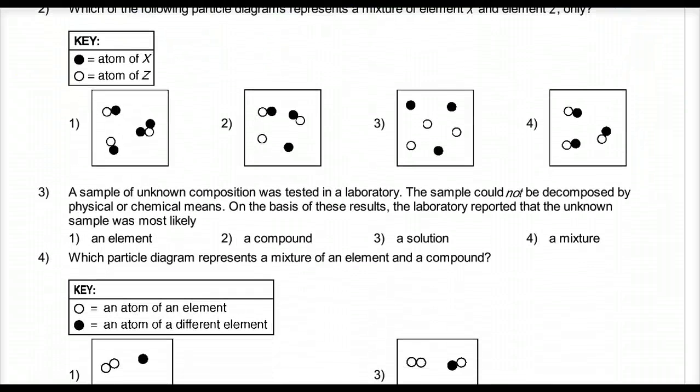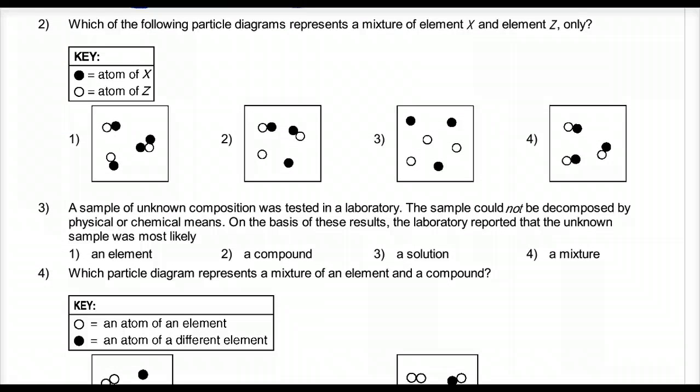Which particle diagrams represents a mixture of element X and element Z only? Well, I need an element, so it's a group of the same type of X's, and X's are this type. We know they differ by protons and not shapes, but we're using models. Z is zero. So I want a mixture of two elements. Well, these aren't elements. These are different molecules, and molecules make compounds. So that's two different compounds.